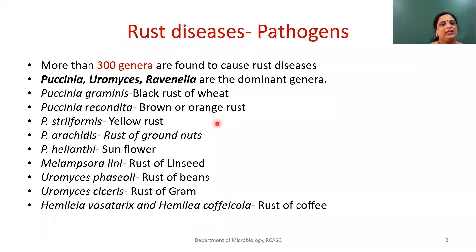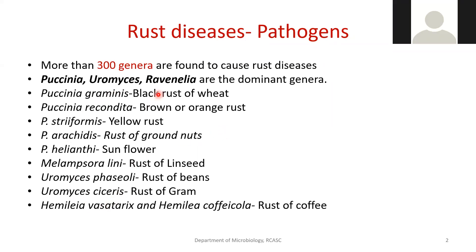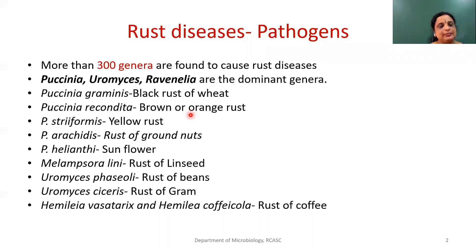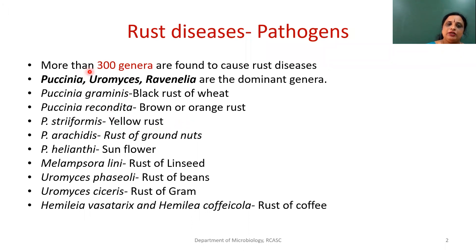There are around 300 genera in the kingdom Fungi which cause rust diseases. Most of them belong to the subdivision Basidiomycetes. The characteristic feature of Basidiomycetes is the production of a spore called basidiospore — an important characteristic feature of Basidiomycotina. There are 300 genera identified to date which cause rust disease in various economically important plants.